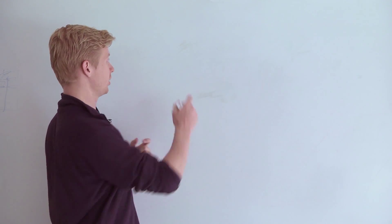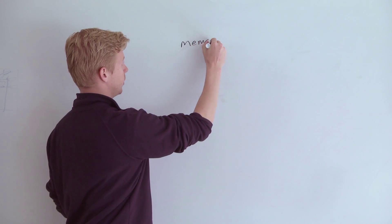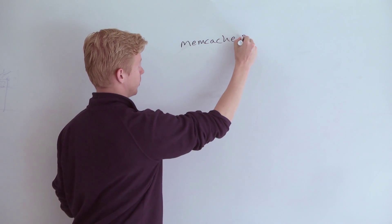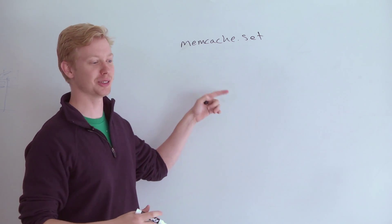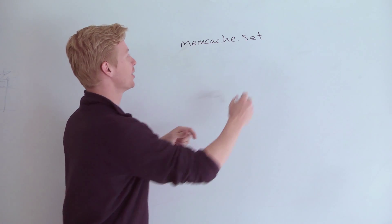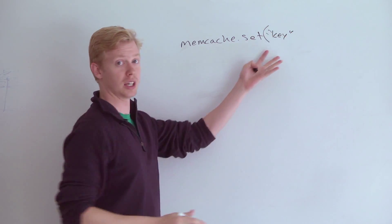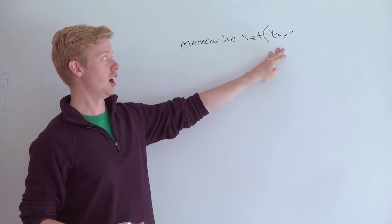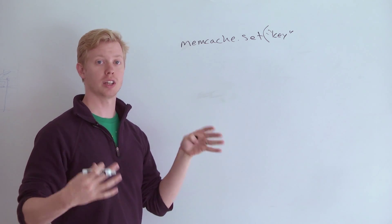We were using Memcache to store strings and integers. In your code, you can say memcache.set, and then you give it a key, which is just a string. It's always a string. That's the Memcache protocol. In the Memcache protocol, it says the value has to be a string as well.